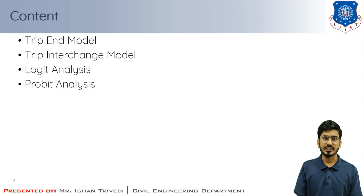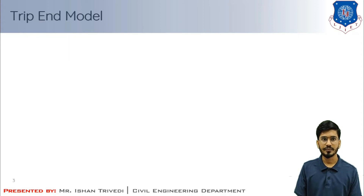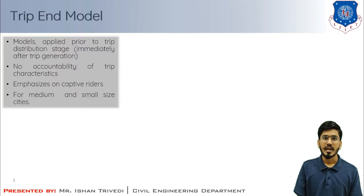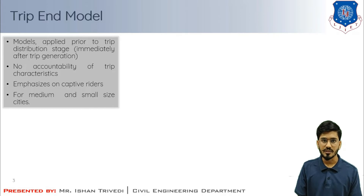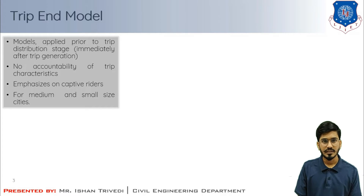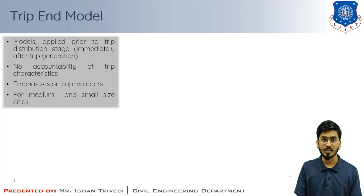Let us first understand the trip end models. Models which are applied prior to the distribution stage, or just immediately after the trip generation stage, are called trip end models. In these models no account will be taken of the route characteristics, and these models emphasize on captive riders — those who do not possess any vehicles and completely rely on public transportation.